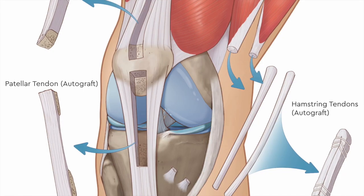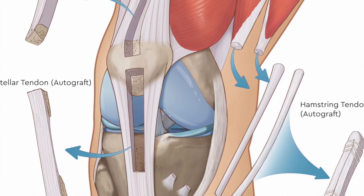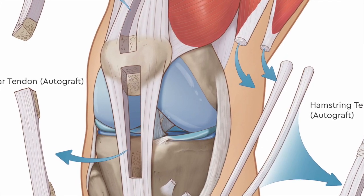So you have all the graft choices available to you: your own tissue — the quadriceps, patella tendon, or hamstrings — as well as an allograft, which is from a cadaver.